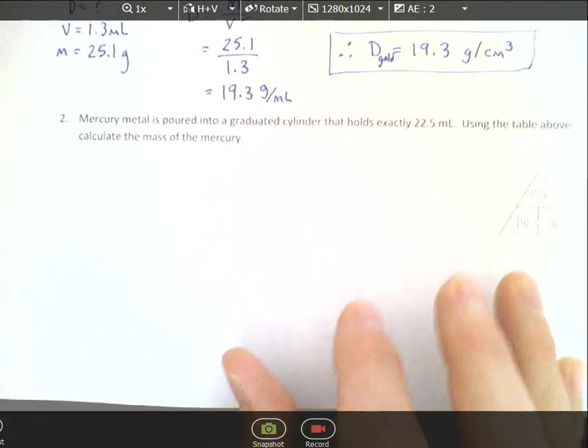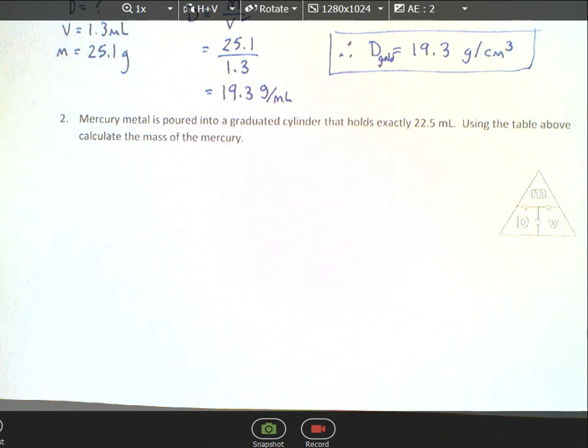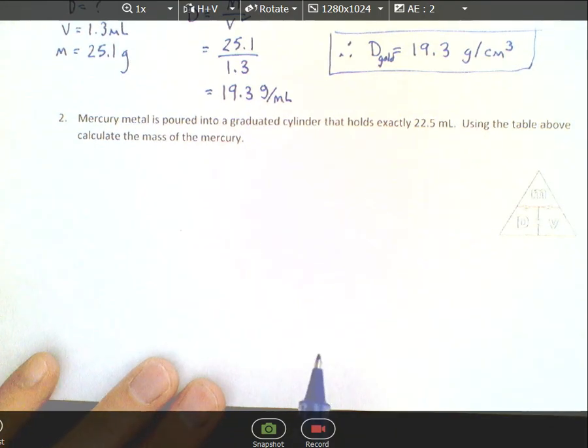They sometimes get more challenging because you may have to rearrange the formula. Mercury is a liquid at room temperature. If you held it in your hand, which you shouldn't because it's poisonous, it will roll around. If you drop it on the ground, it turns into little balls and rolls away. It's pretty cool to see. You can Google videos of people dropping mercury.